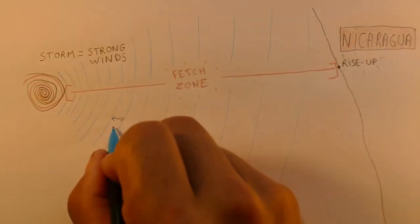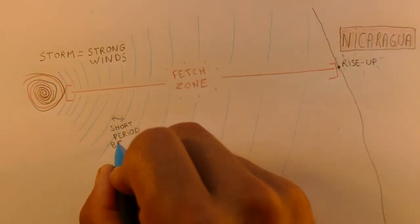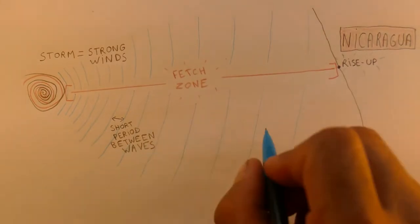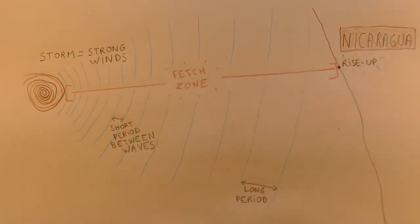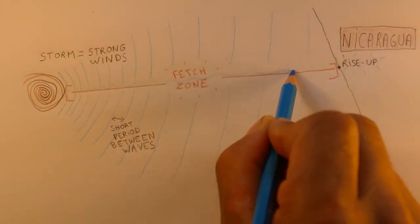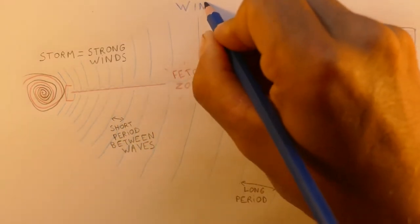This brings us nicely onto long and short period swells. The longer the fetch zone, so the longer that swell has to travel, the bigger the period between each line of swell is going to be, so that swell is going to become further apart. Meaning the longer the fetch zone, the more powerful and actually cleaner the surf is going to be.